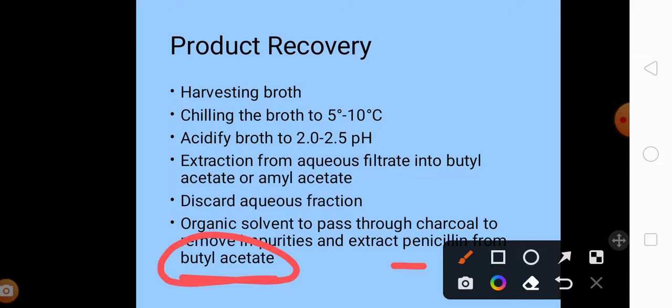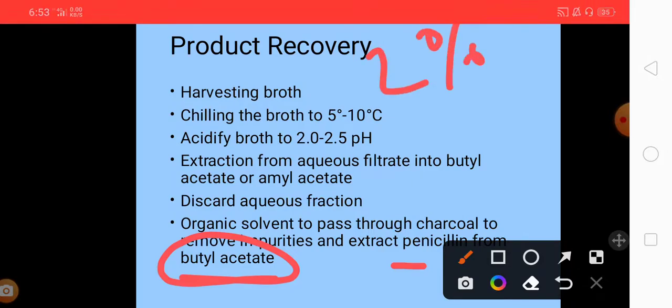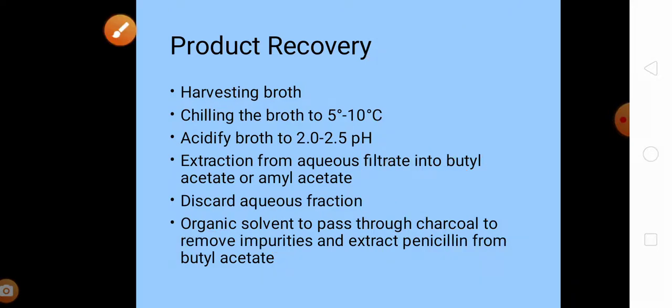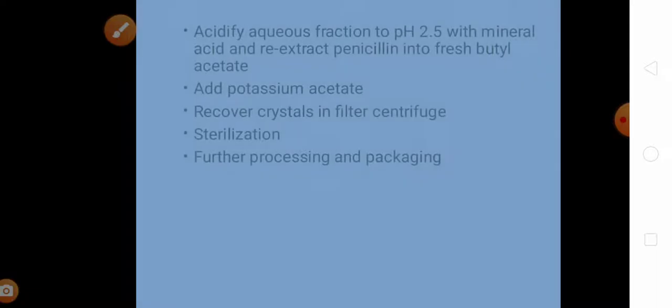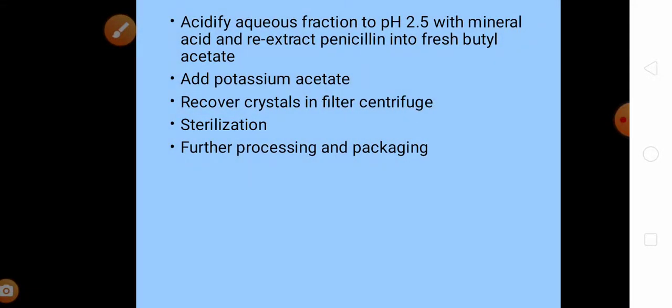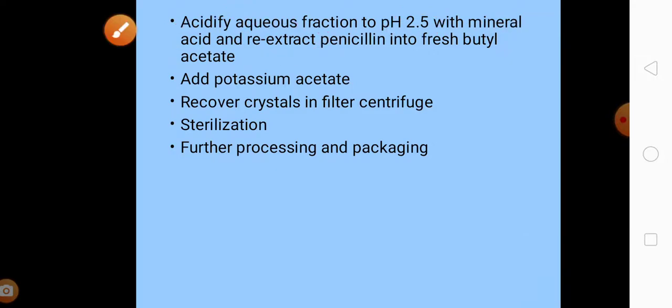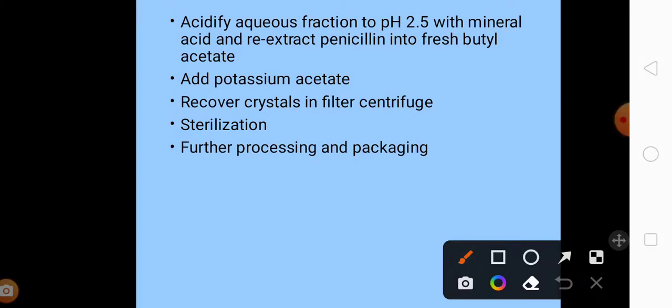We will recover penicillin from butyl acetate by adding 2 percent of aqueous potassium buffer at a pH of 7.5. Next, this aqueous fraction will be acidified to a pH of 2.0-2.5 with mineral acid. Again, penicillin will be re-extracted into fresh butyl acetate.